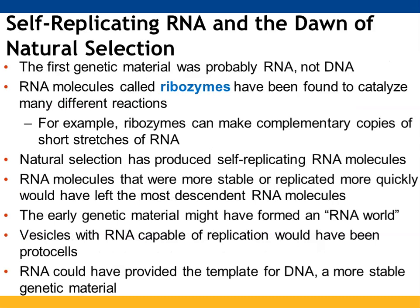The first genetic material is most likely thought to be RNA as opposed to DNA. RNA molecules such as ribozymes are known to catalyze lots of different reactions. Ribozymes can produce complementary copies of RNA. Natural selection has led to production of self-replicating RNA molecules. Those RNA molecules that were more stable or capable of replicating more quickly would have left the most descendant RNA molecules, forming what we call an RNA world. Vesicles with RNA that could reproduce would have been classified as protocells, and RNA could have provided the template for DNA, a more stable form of genetic material.